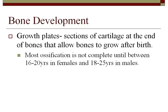After a baby is born, bone growth can continue through growth at growth plates. Growth plates are sections of cartilage at the end of bones that allow bones to continue growing after birth. Most ossification is not complete until between 16 to 20 years in females and 18 to 25 years in males. You can check whether you are still able to grow by taking an x-ray of your hand. If your growth plates are still active, they look like they are separated from the bone. Once they have ossified, you can't see them anymore — they have become part of the bone.